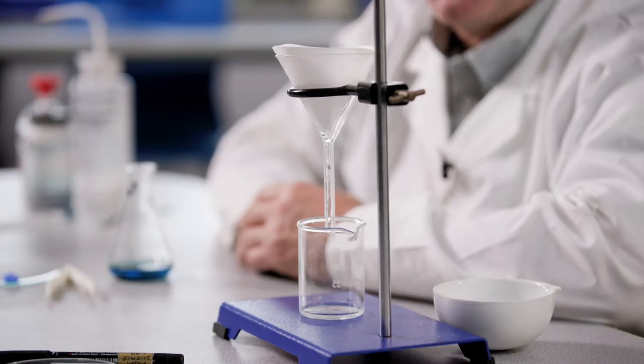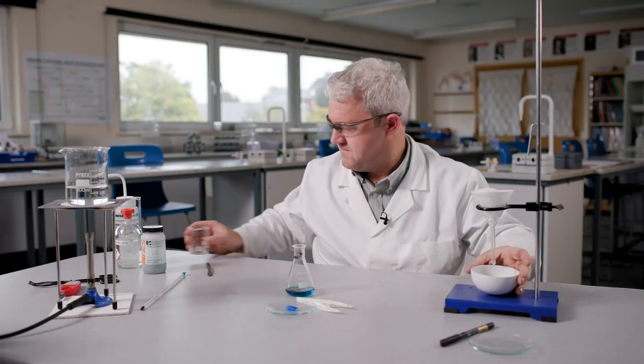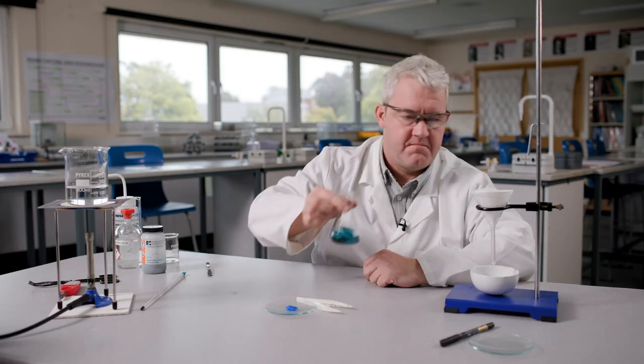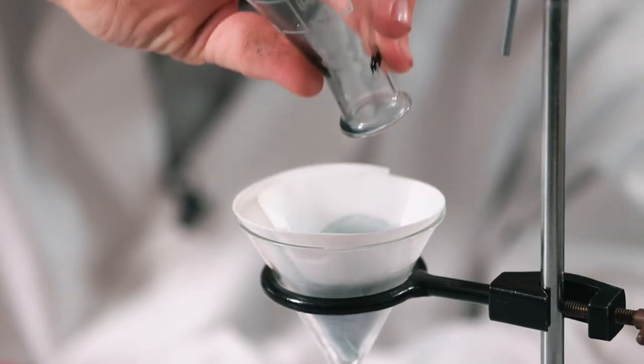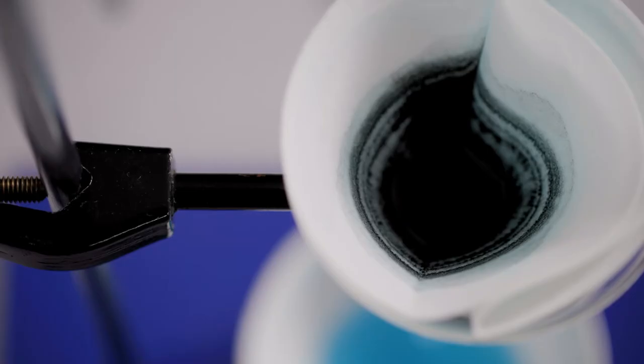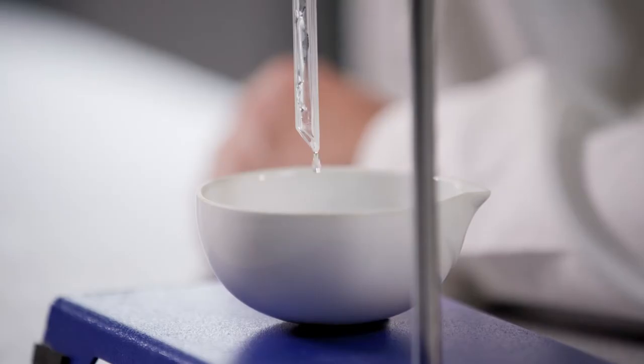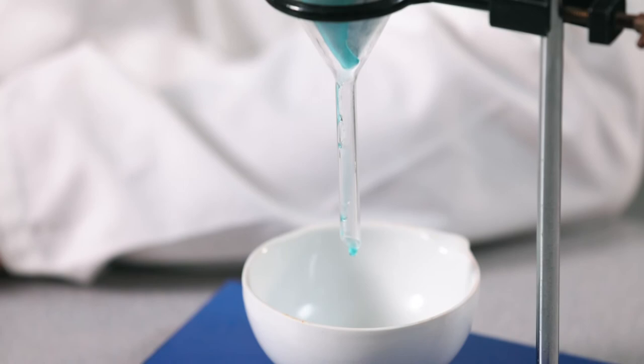Alternatively, the funnel can be lightly clamped with a conventional clamp. Pour the reaction mixture into the filter paper, taking care not to overfill beyond the line of the paper. Depending on the thickness of the filter paper and the amount of excess copper oxide, it may take a few minutes for the copper sulphate solution to pass through the filter and be collected in the evaporating basin.